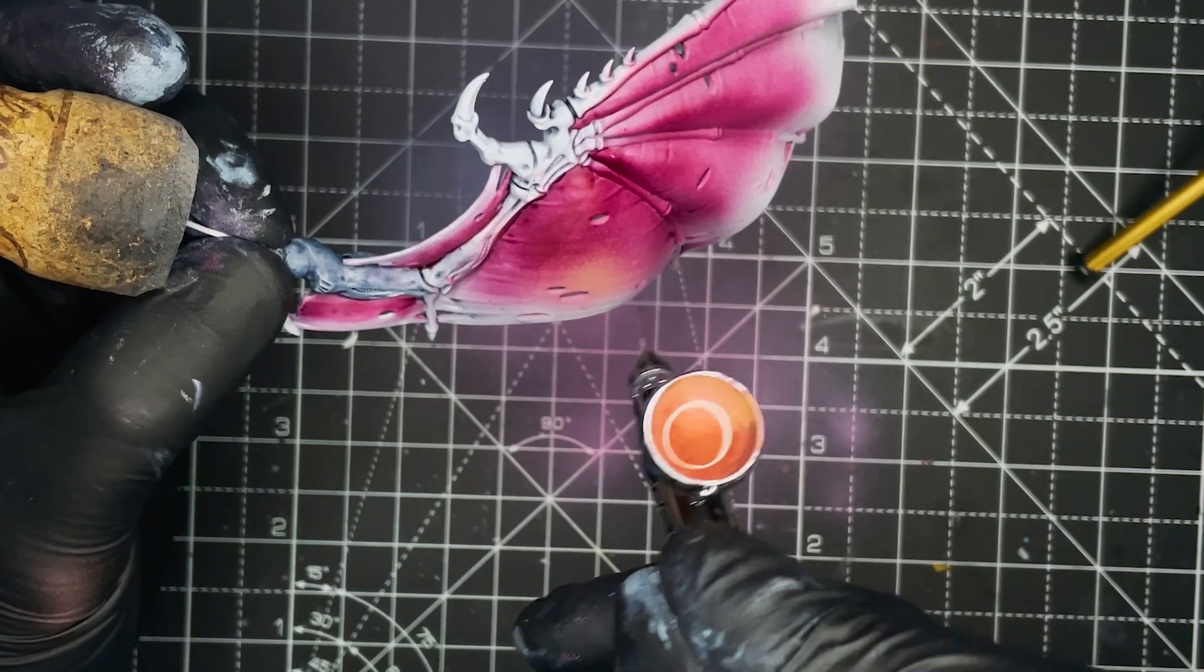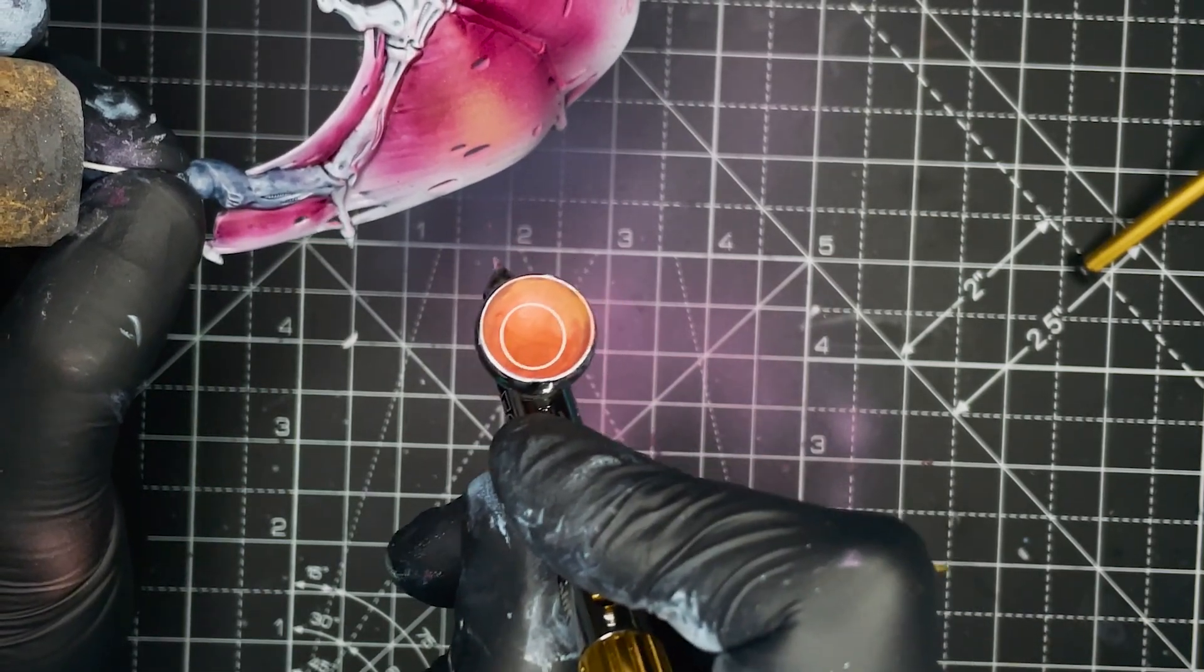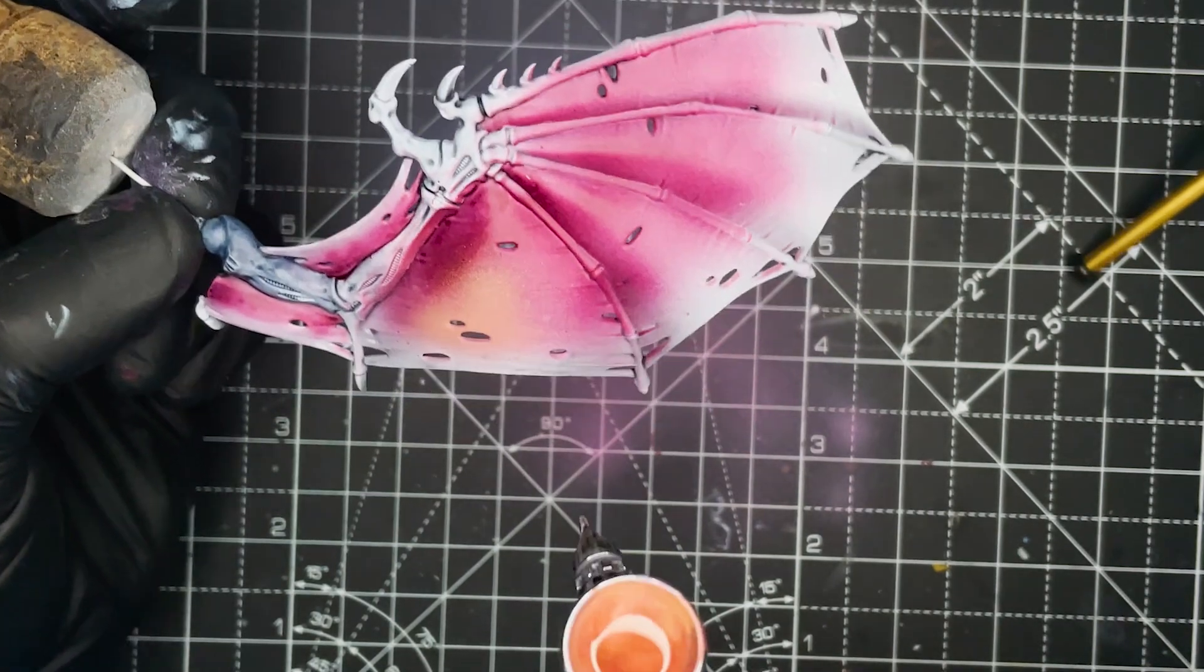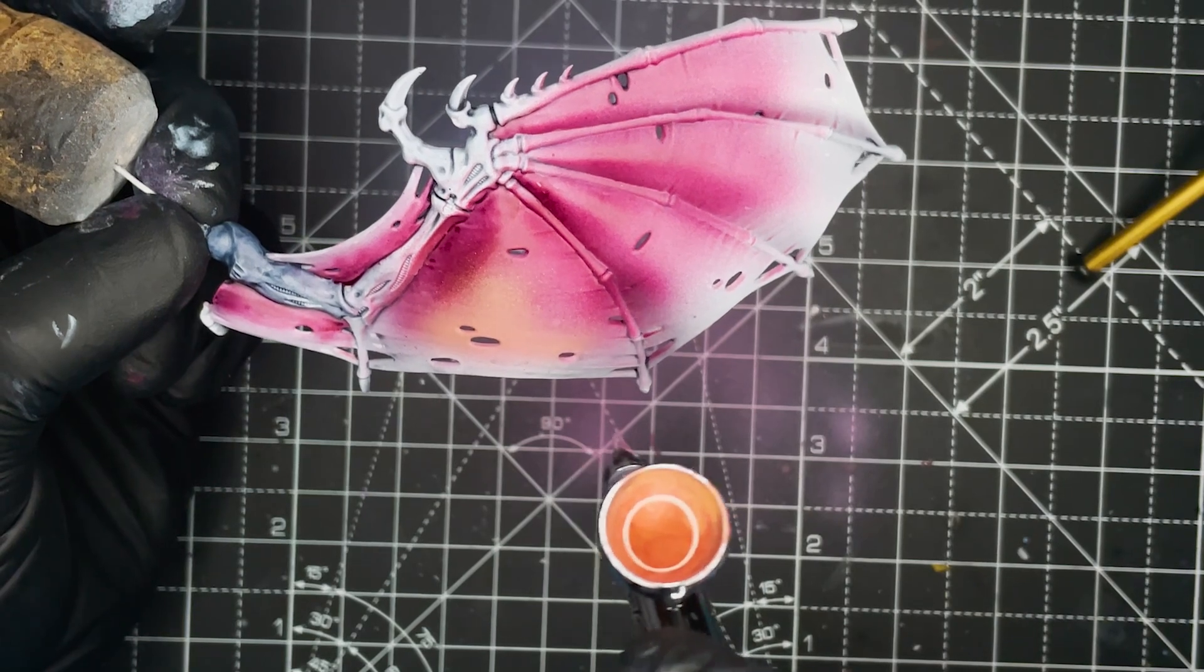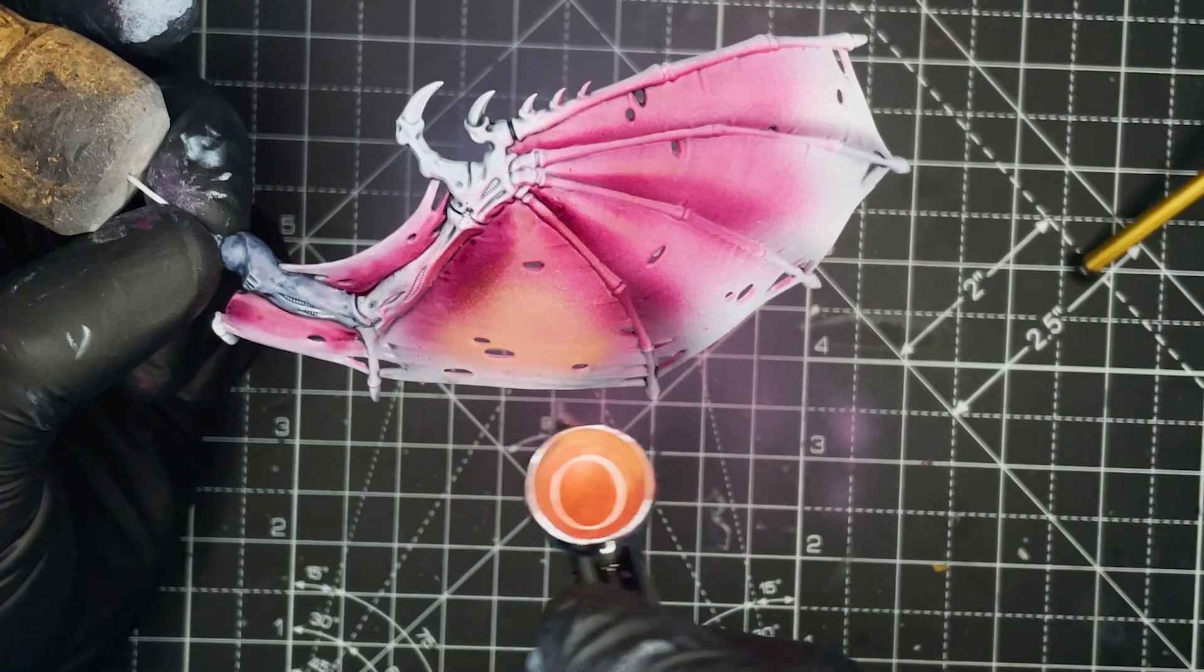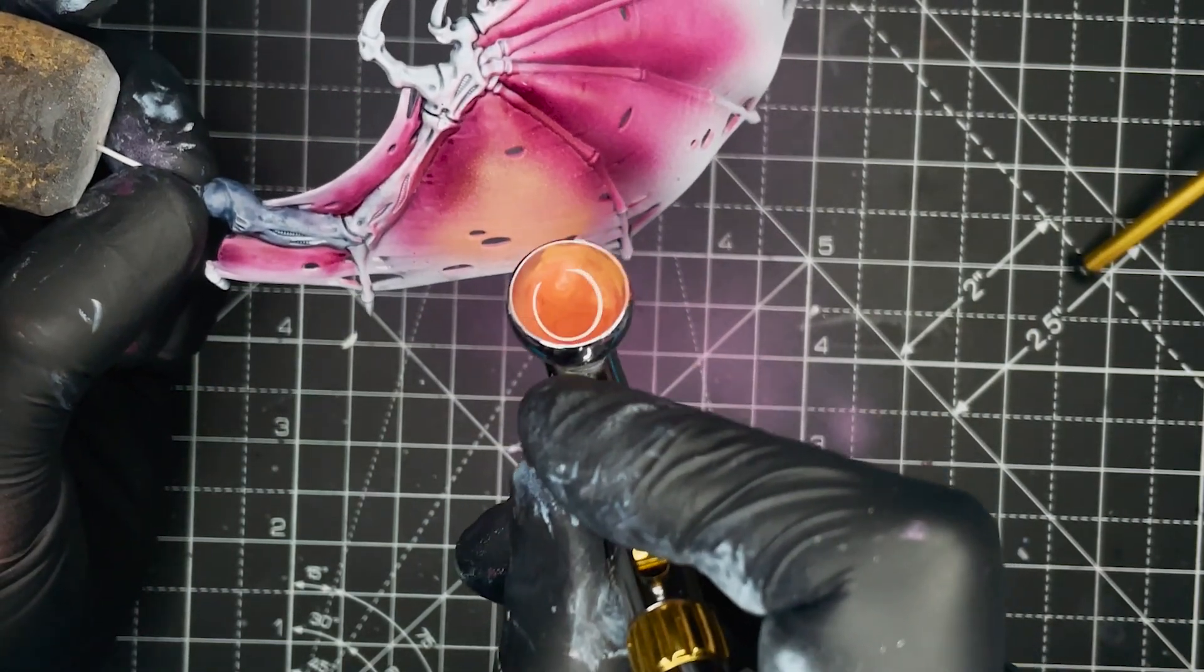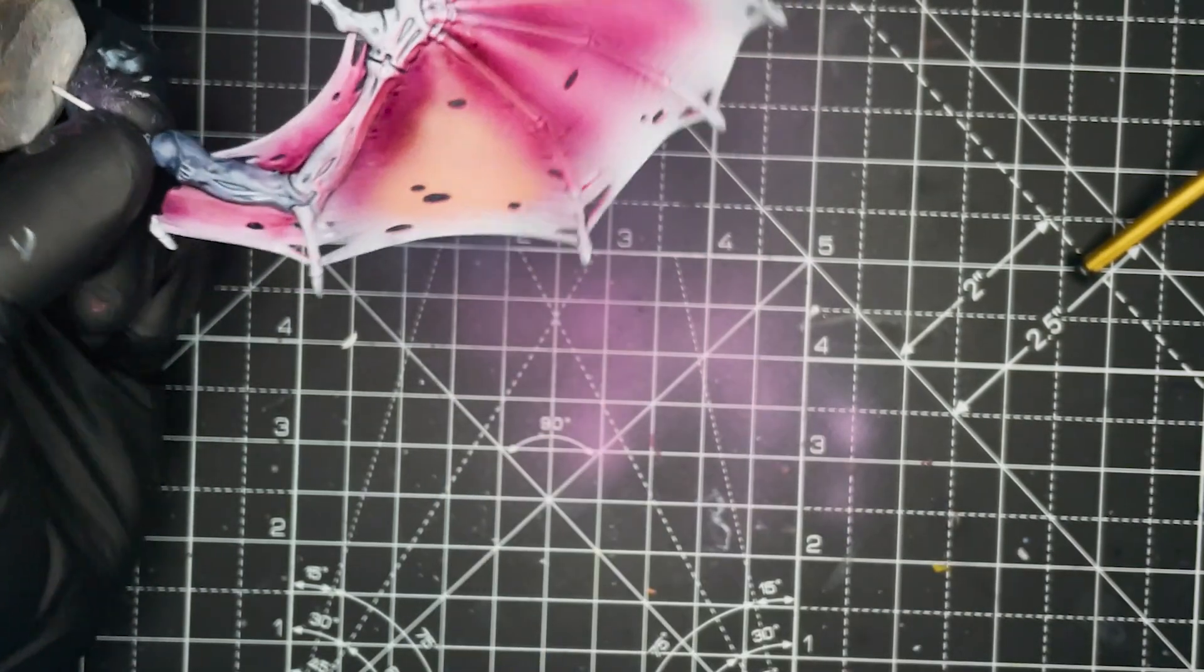Next we're going to add Cadian Fleshtone to our Volupus Pink at a 50-50 mix to make up our fleshtone which we are going to highlight all of the pink with. Again I'm using the airbrush and this time we just want to cover a slightly lesser area, leaving some of the Volupus Pink left behind. And if you do overspray any of this color you can always go back in with the previous Volupus Pink just to touch up any of the edges.